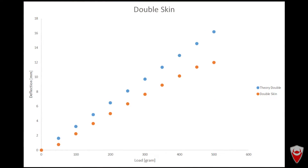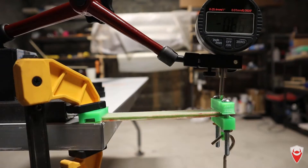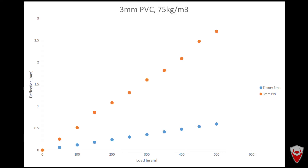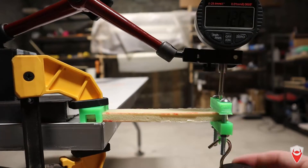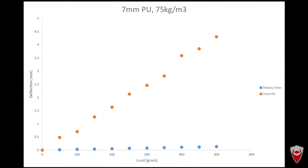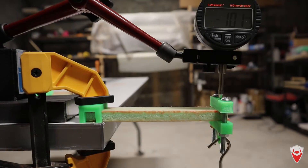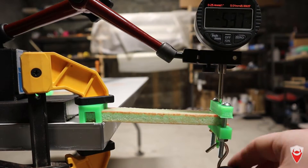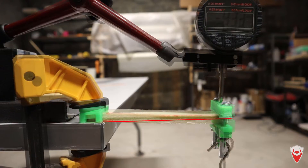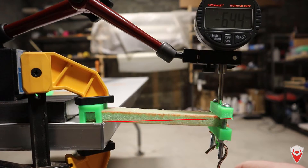Here are the final results for the double skin. You can see that the projected deflection is actually more than the experimental results — an interesting outcome, but they don't vary too widely. Moving on to the 3mm PVC core, the projected deflection is a fair amount less than what was experimentally measured. For the 7mm core, we're seeing big variances between projected and experimental results — this part is actually deflecting more than the 3mm core and is over an order of magnitude worse than the projection. The 10mm core variance gets even worse, deflecting more than both other cores and almost two orders of magnitude off its projected result.